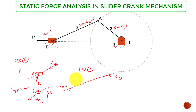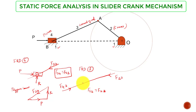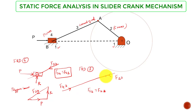For a two-force system to be in equilibrium, F43 must equal F23 in magnitude, and they must act along the same line of action in opposite directions. Since we know the direction of F43 from the piston's free body diagram, the force F23 must be equal and opposite to F43. So F43 equals F23, and all forces on the connecting rod are resolved.